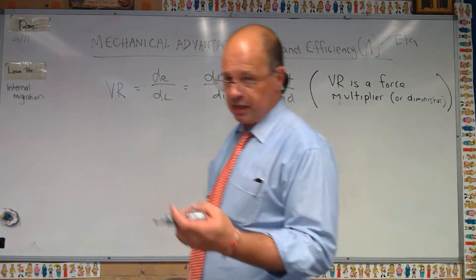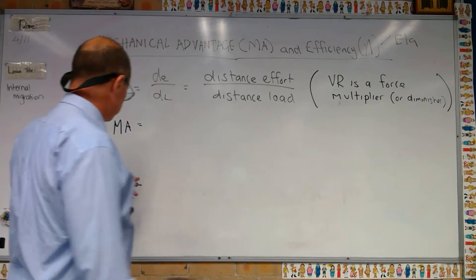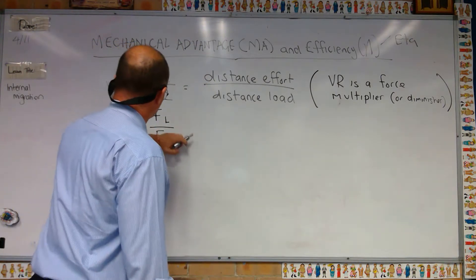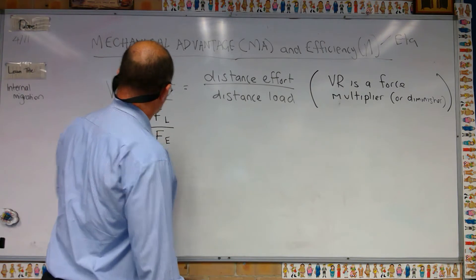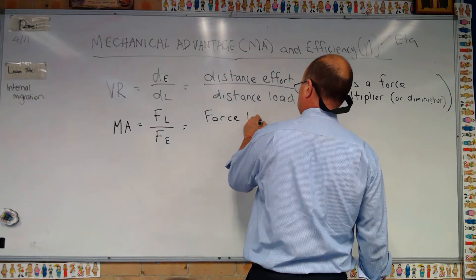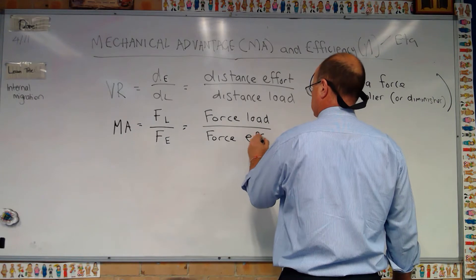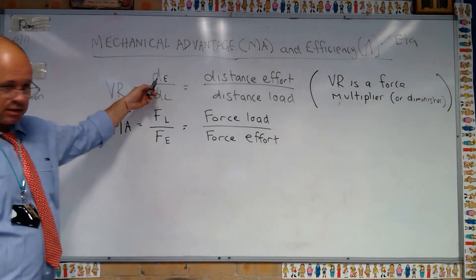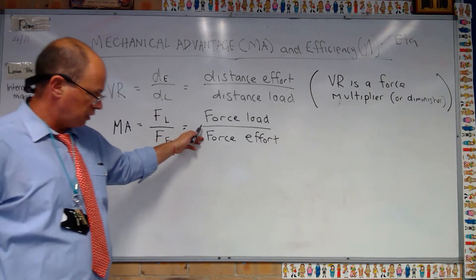With mechanical advantage, there's a formula you should know: MA is equal to force of load over force of effort. This is one point where you can get confused — when calculating velocity ratio, we use distance of effort over distance of load, but when calculating mechanical advantage, it's force of load over force of effort. So they're almost flipped.